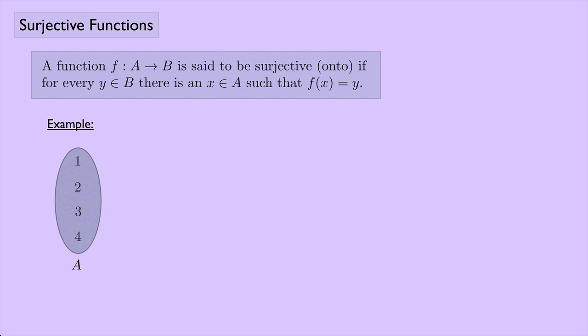Suppose I have a set A with the numbers 1, 2, 3, and 4, and a set B with the letters a, b, c, and d. I'm going to define a function phi that maps 1 to a, 2 to c, 3 to b, and 4 to d. Is this surjective?